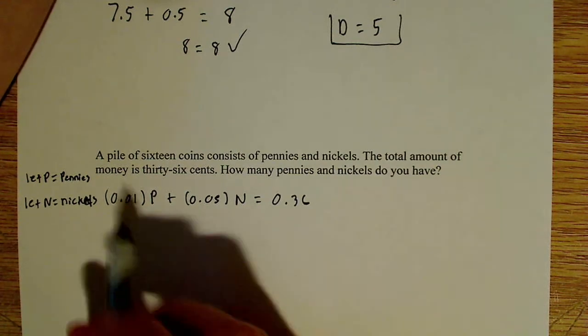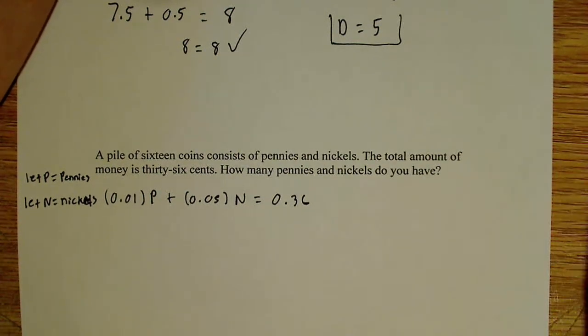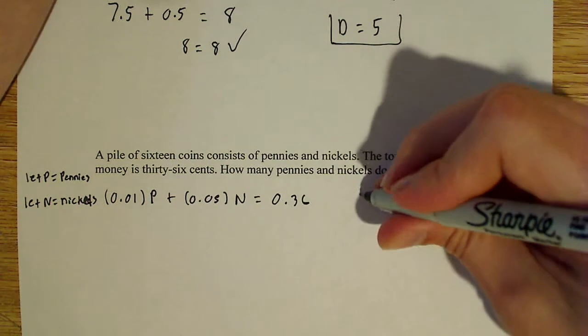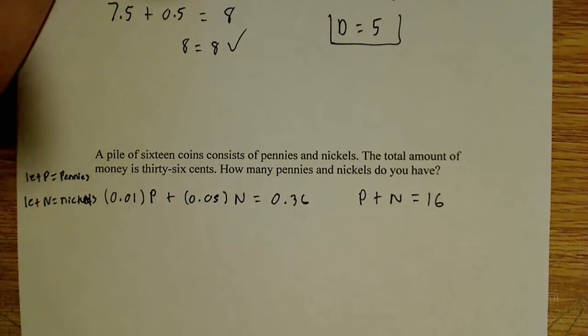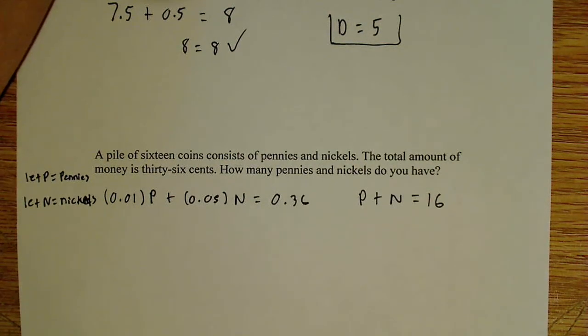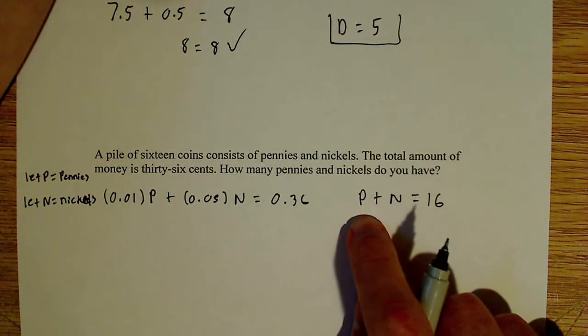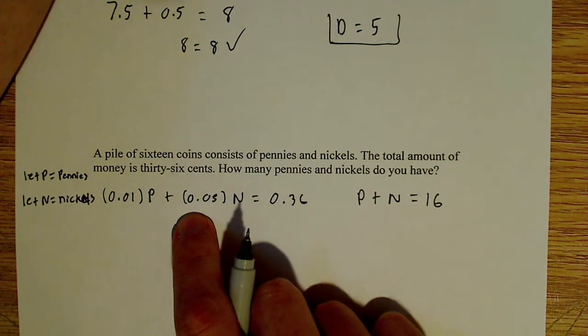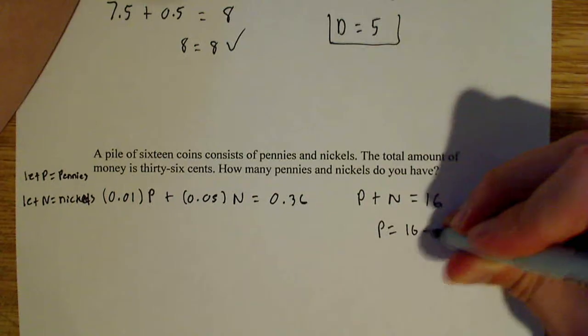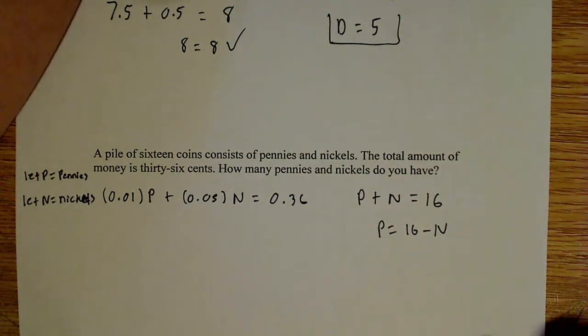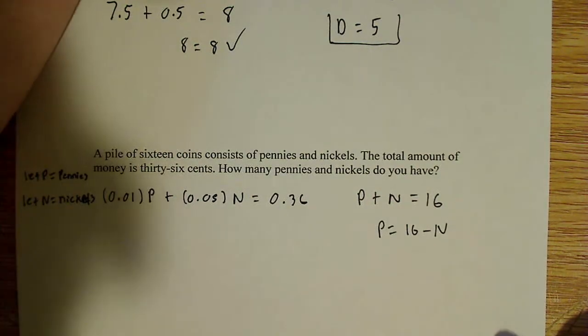And up here it gives us a second piece of information. It says a pile of 16 coins. So we know that the number of pennies plus the number of nickels is equal to 16. So that's my second equation. Now what I'm going to do is I'm going to solve for P over here, and I'm going to plug that into this equation over here. So P is equal to 16 minus N. And now that I have that,